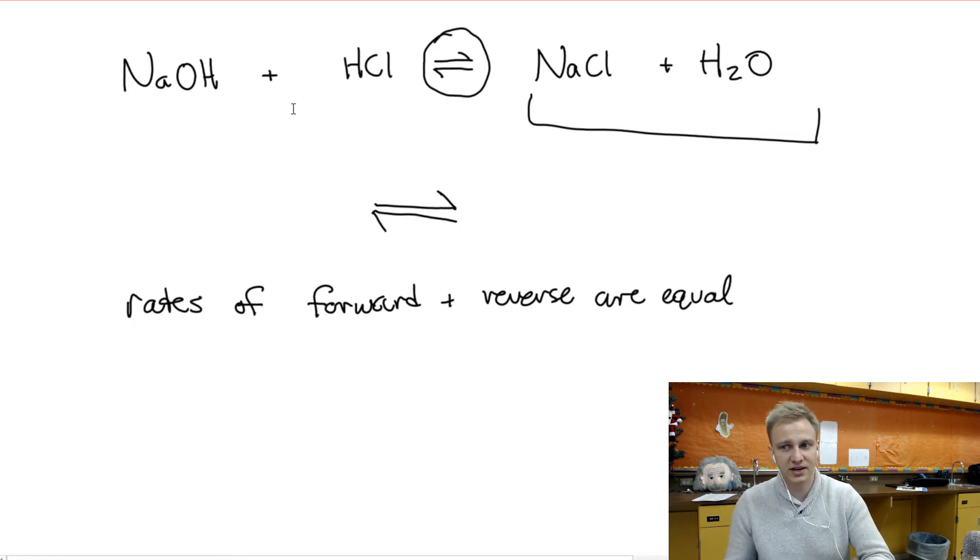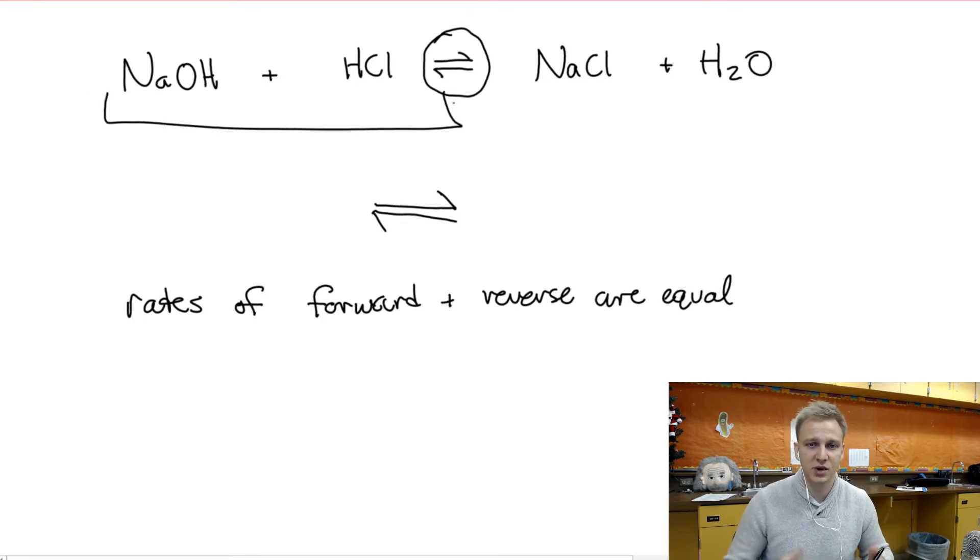We can also have reactions where let's say that we have the concentration of the reactants or the amount of the reactants being higher. In that particular case we would say that this is reactant favored, meaning that this reaction doesn't really happen a lot but that these reactants are staying basically the same and not reacting together. So that's what equilibrium is, it's when the rates of the forward and reverse are equal.